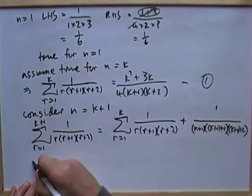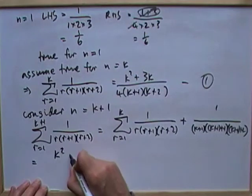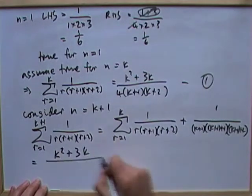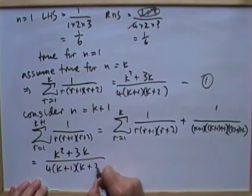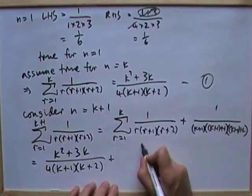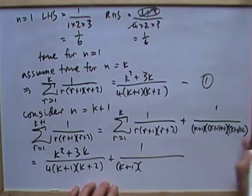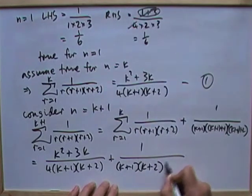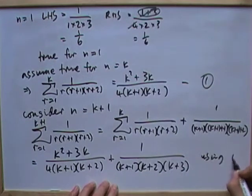And then, using 2, that would produce, this part can be replaced by this. So I've got k squared plus 3k over 4 times k plus 1 times k plus 2, plus this term, which is 1 over k plus 1 times k plus 2 times k plus 3. Using 1. It's important to use that part.